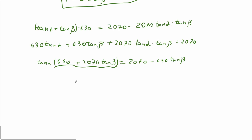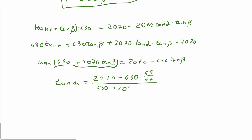The last step is to divide both sides by (630 plus 2070 tangent beta). So tangent alpha equals (2070 minus 630 times tangent beta) divided by (630 plus 2070 times tangent beta). Let's substitute tangent beta with 55 over 67 that we found earlier. Once you calculate and simplify this expression, you get that tangent alpha equals 2030 over 6030, which simplifies to the value we need.